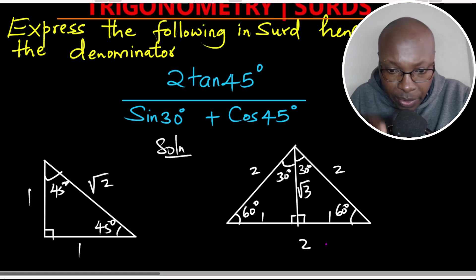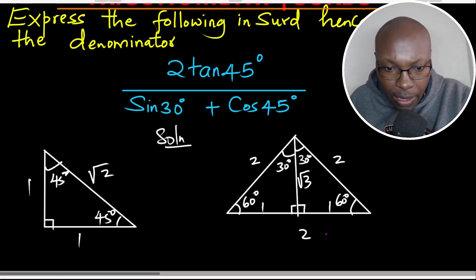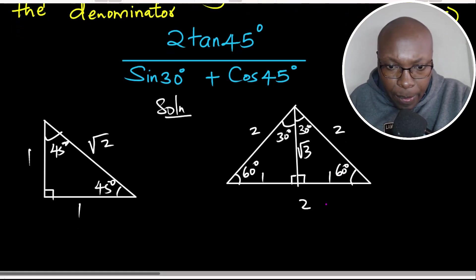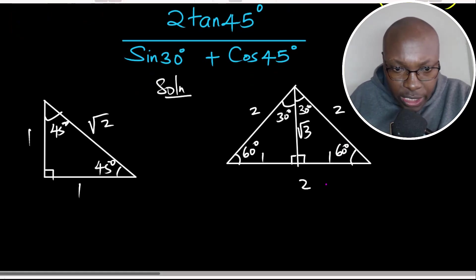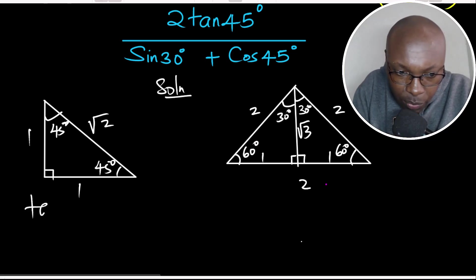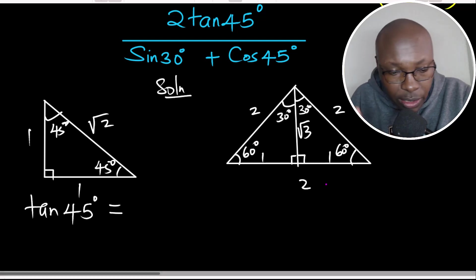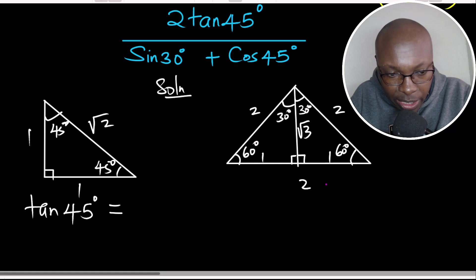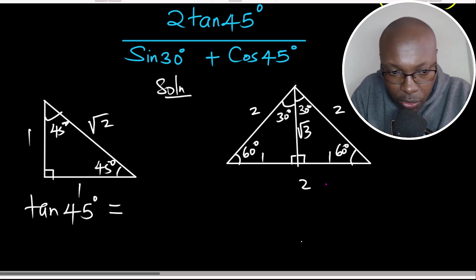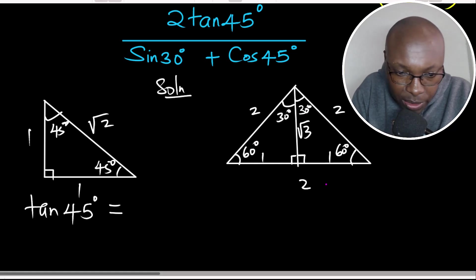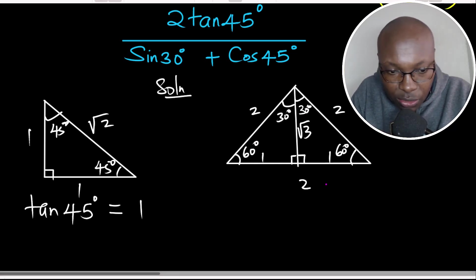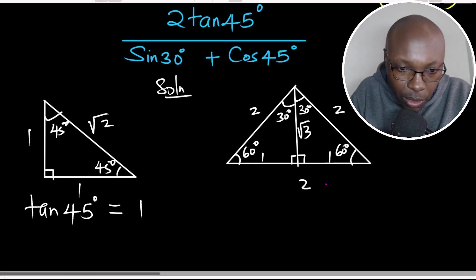These are the two triangles we use to get the trigonometric ratios of the special angles: 45 degrees, 30 degrees, and 60 degrees. Now, tangent of 45 will be obtained from the first triangle. Tangent is the opposite side divided by the adjacent. Considering the 45-degree angle, the opposite side is 1 and the adjacent is 1, so tangent of 45 equals 1 divided by 1, which is 1.